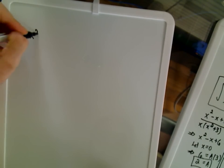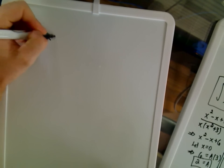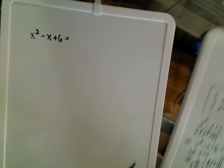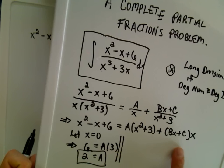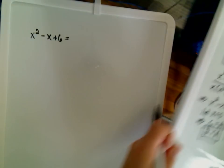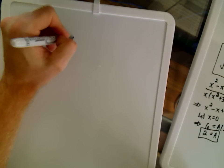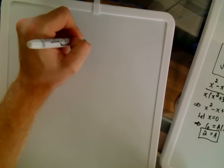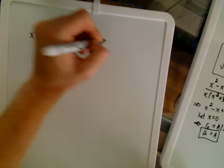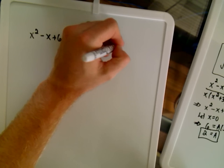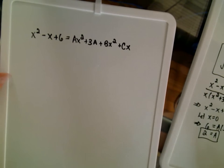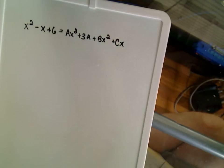Okay, so we have x squared minus x plus 6. If I multiply out the right-hand side, my Ax squared plus 3 plus Bx plus C, when I multiply that out, I'm going to get Ax squared plus 3A plus Bx squared plus Cx. And this is where now we have to do our equating of the coefficients.